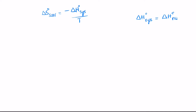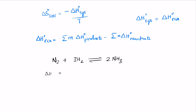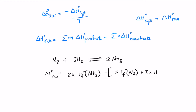We know the formula for delta H of the reaction, which is sigma M times delta H of the products minus sigma N times delta H of the reactants. For the reaction N2 plus 3H2 gives 2NH3, we write delta H of the reaction as 2 times the Hf of NH3 minus 1 times Hf of N2 plus 3 times Hf of H2.